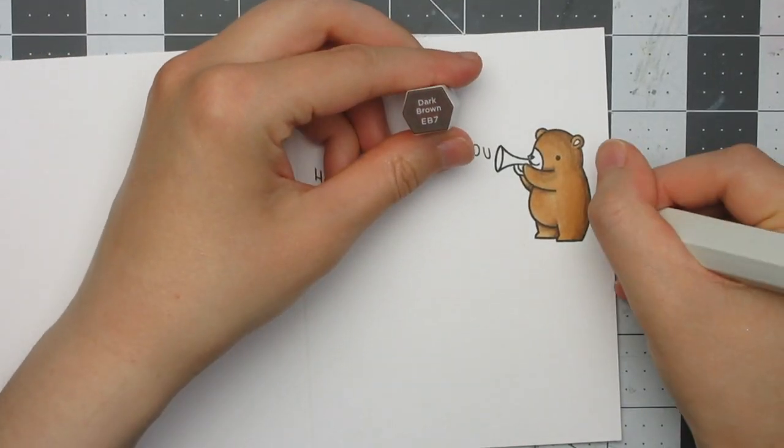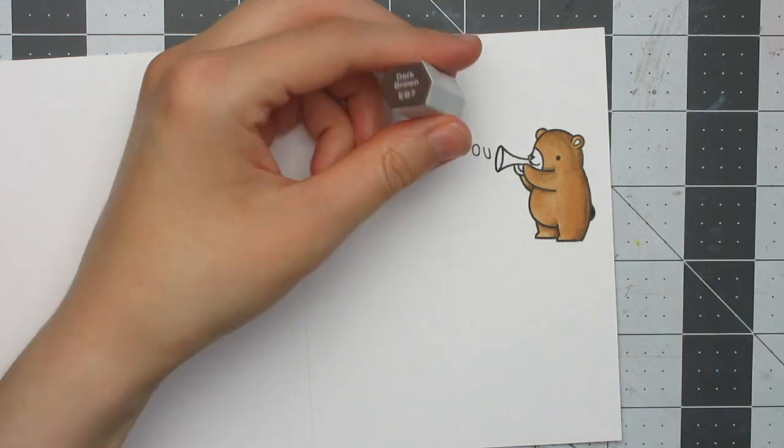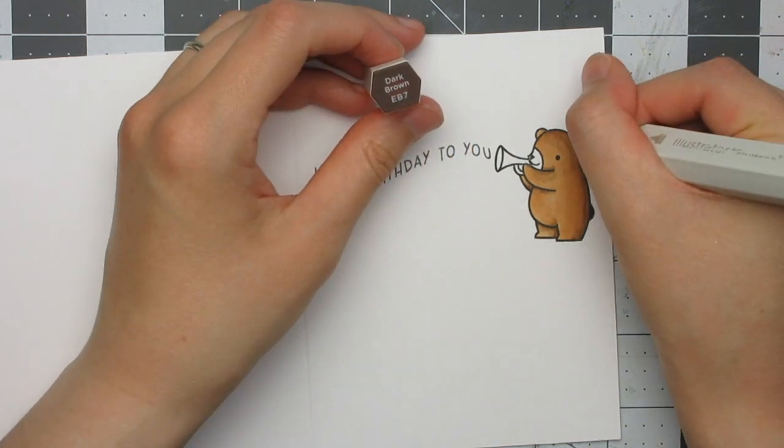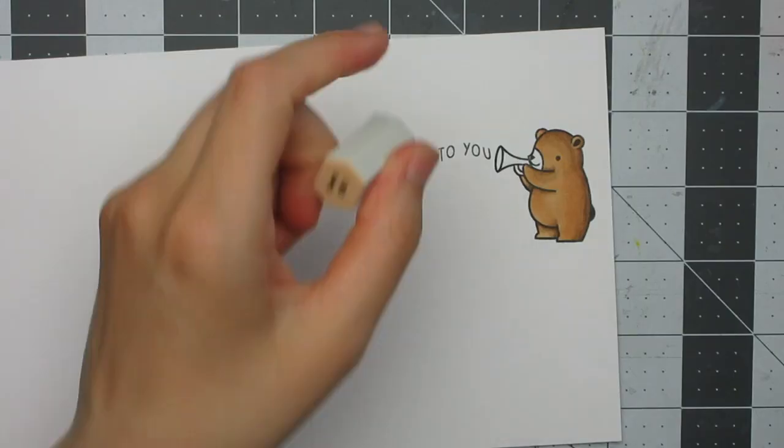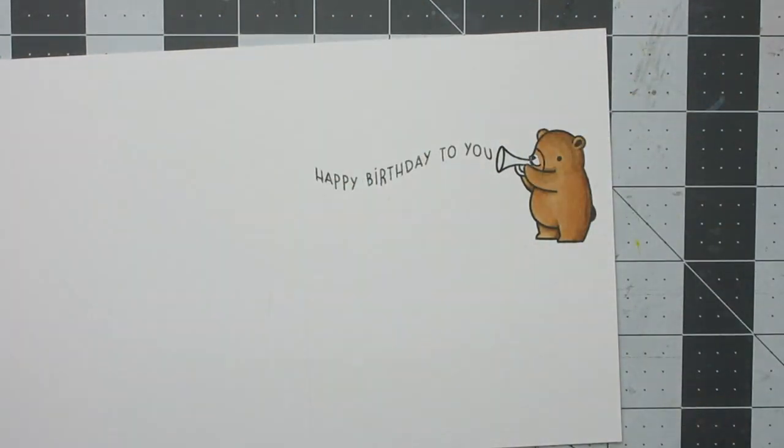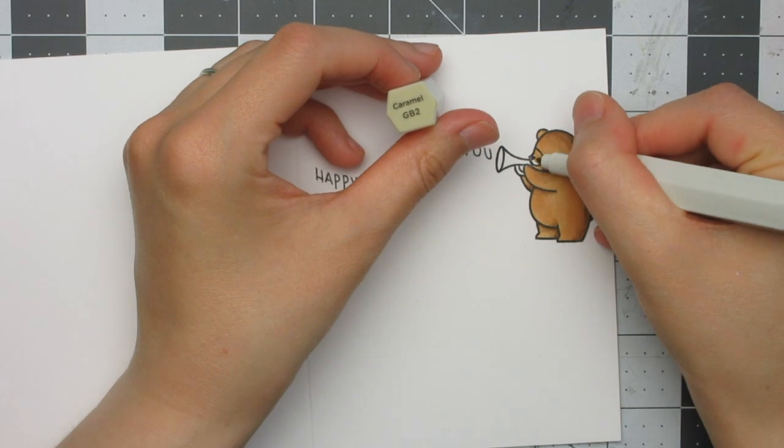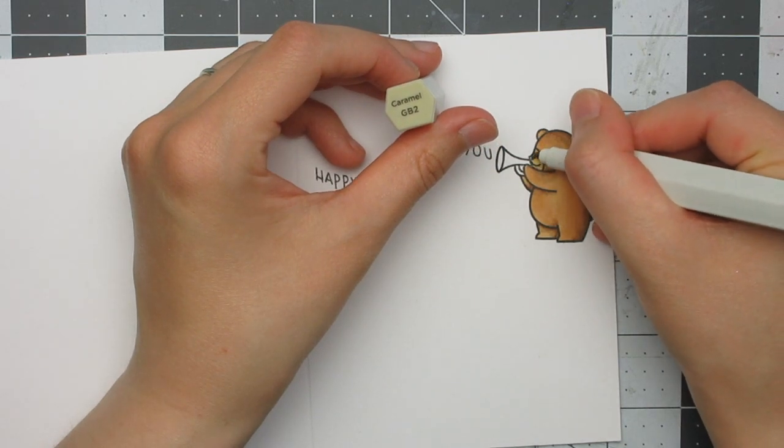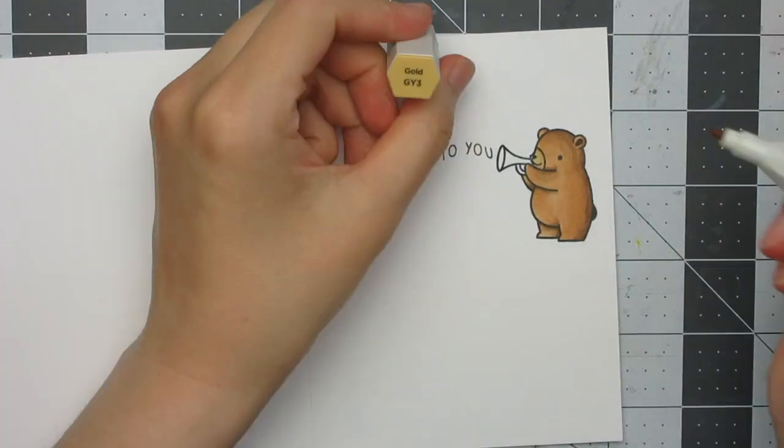Once I was happy with the body of the bear, I then went and brought in an even darker brown for his tail and the inner part of his ear. Then I decided to do his muzzle very slightly lighter, so I used the lightest color I'd used on his body as the darker color there and then brought in an even lighter color as well for the highlights.